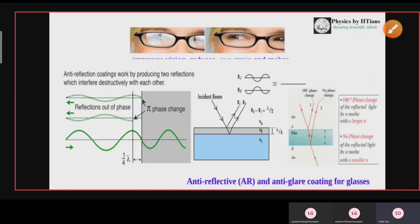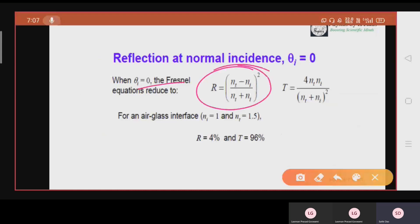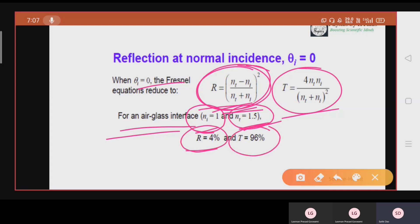How much reflection happens at the glass interface? That is R equals to, it will come from Fresnel's law, that is the reflectance and the transmittance. At normal incidence, R is this form: n_t minus n_i divided by n_t plus n_i whole square, and T equals to transmission, transmittance equals to 4 n_t n_i divided by n_t plus n_i whole square. At an air glass interface where the refractive index of the air is 1 and the refractive index of the glass is 1.5, the reflection is 4% and transmittance is 96%.